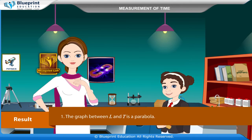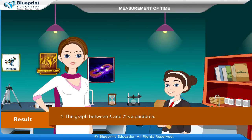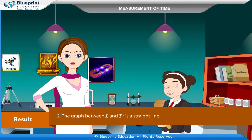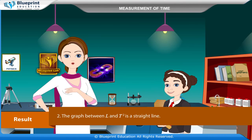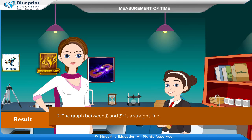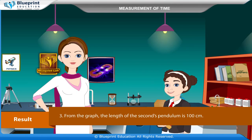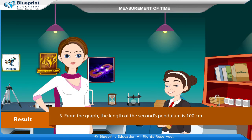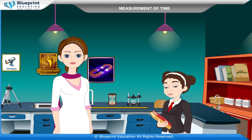Result: The graph between L and T is a parabola. The graph between L and T-square is a straight line. From the graph, the length of the seconds pendulum is 100 cm. Thank you for this knowledgeable experiment.